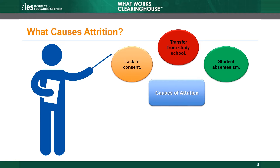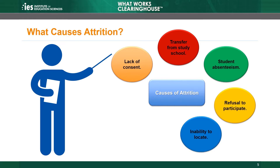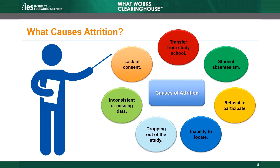Other causes of attrition include a student's refusal to participate, an inability to locate students who are enrolled in the study, students dropping out of the study, and inconsistent or missing data.